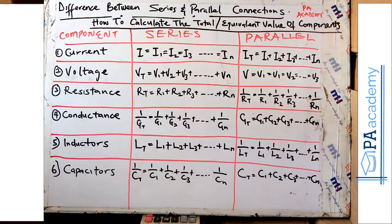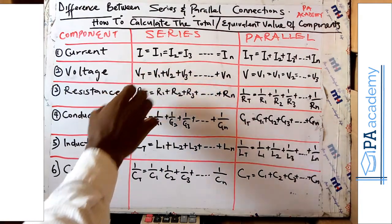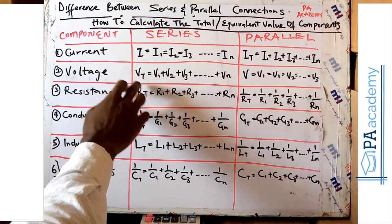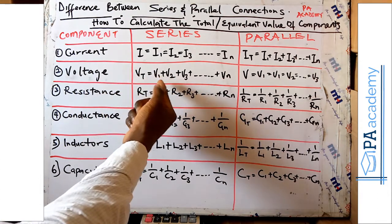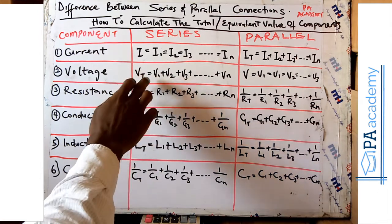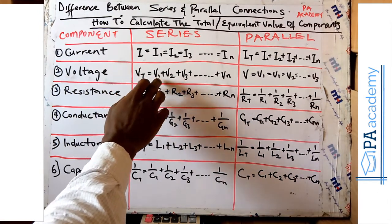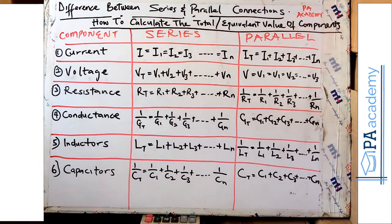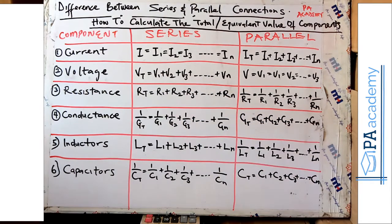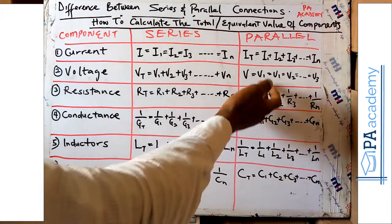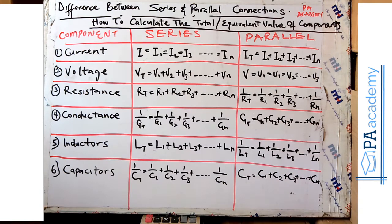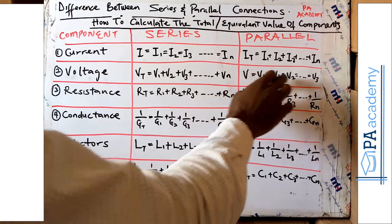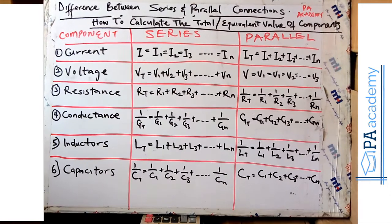Now let's look at voltage. For voltage in a series connection, the equivalent total voltage is the sum of the individual voltages across the components: Vt = V1 + V2 + V3, depending on how many components you have. But on the parallel side, the voltage is the same across each of the components in a parallel connection.